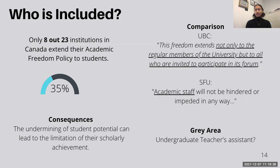As a comparison, we can see here on the top right of the slide two universities in Western Canada. The University of British Columbia has the most extensive inclusion of academic freedom, explicitly stating their policy will apply not only to the regular members of the university, but to all who are invited to participate in its forum. In contrast, Simon Fraser University states their academic freedom policy in their collective agreement, and every clause in that agreement is directed to academic staff.